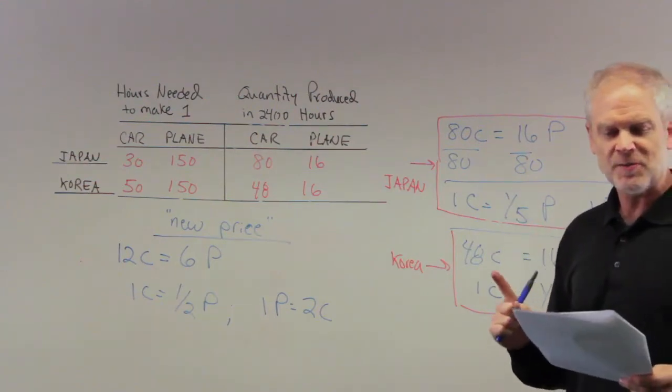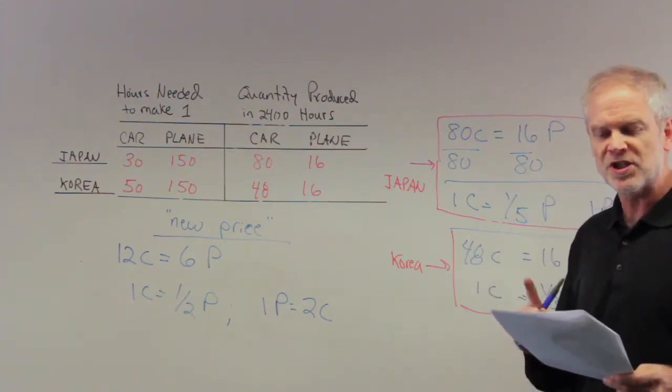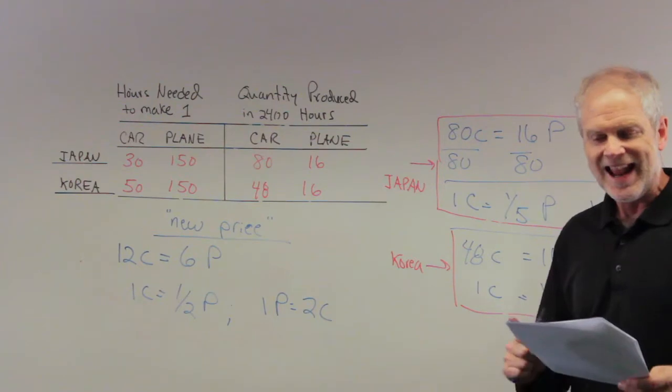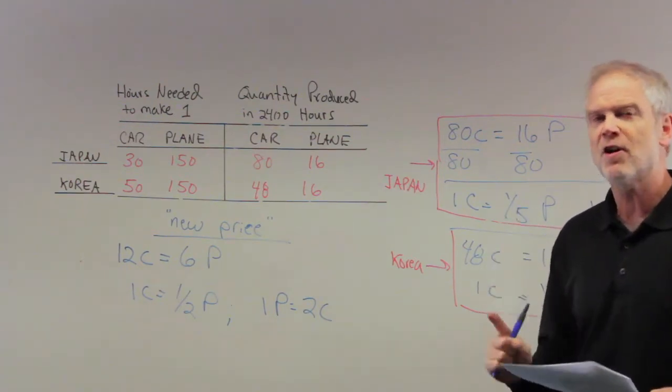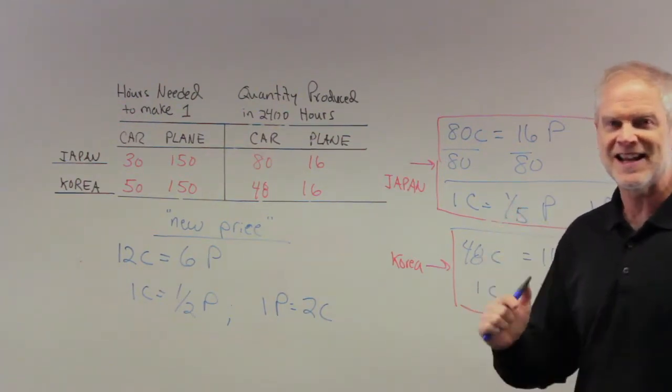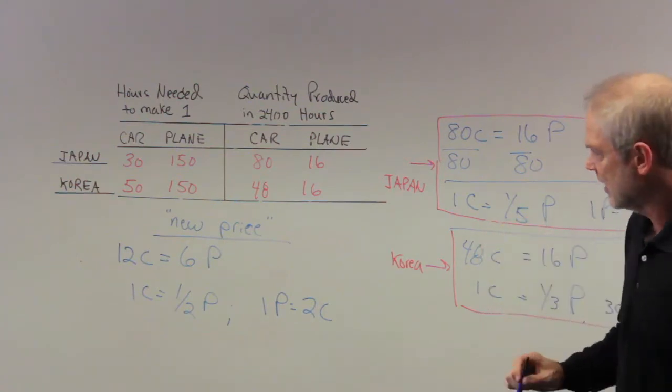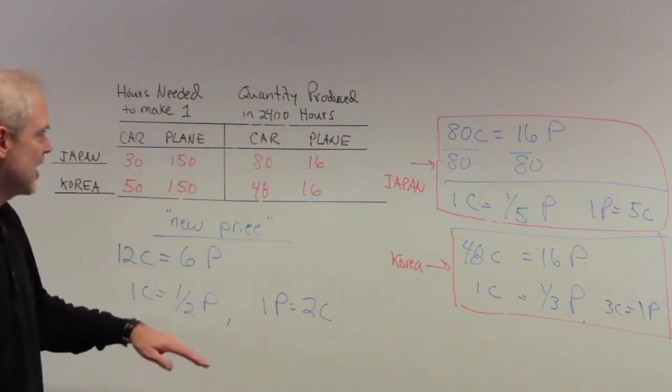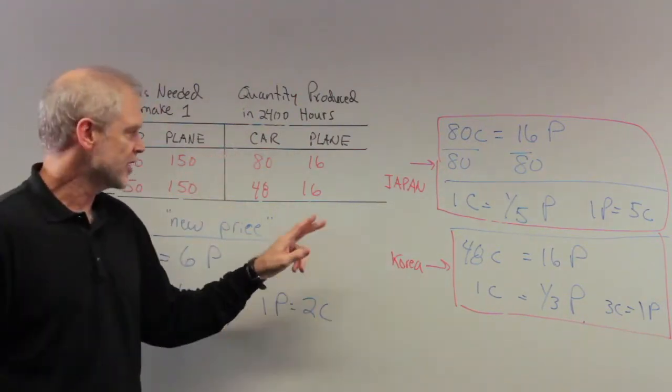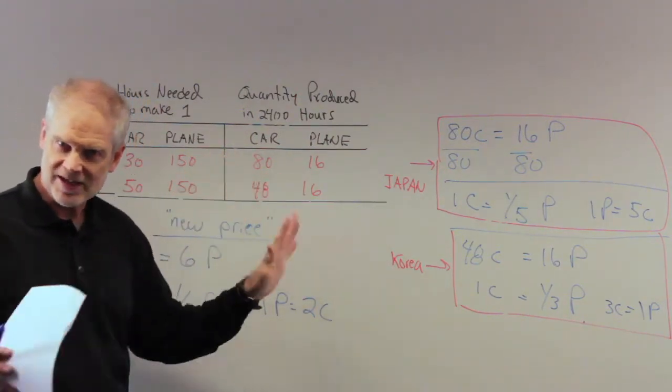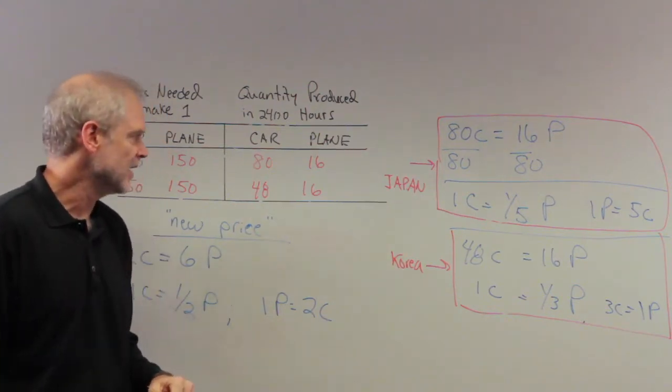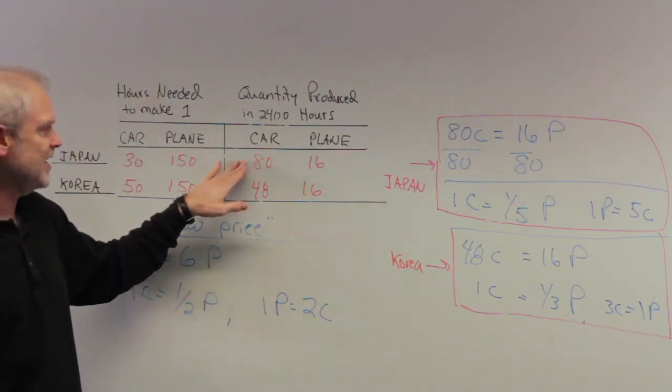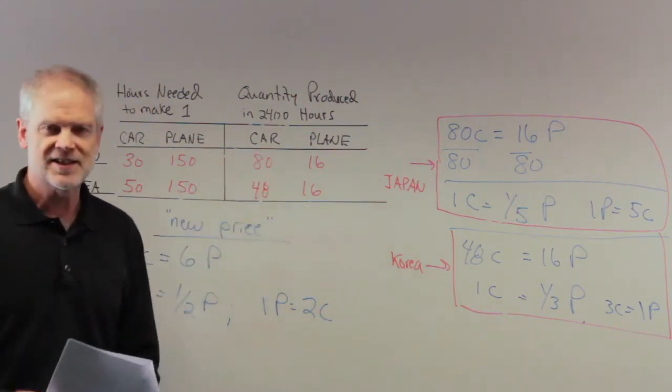If each country spends all its time producing the good in which it has a comparative advantage and trade takes place at a price of 12 cars for six airplanes. We've been to the comparative advantage. We know that Japan's going to specialize in cars. We know that Korea's going to specialize in planes. We've done that in Problems 8 and 9. So now we know Japan's got 80 cars and Korea's got 16 planes.